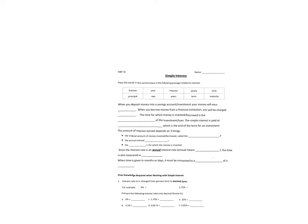First, we need a little bit of terminology. Read with me. When you deposit money into a savings account or investment, your money will earn interest. When you borrow money from a financial institution, you will be charged interest. The time for which the money is invested and borrowed is the term of the investment or loan. The simple interest is paid at maturity, which is the end of the term for an investment.